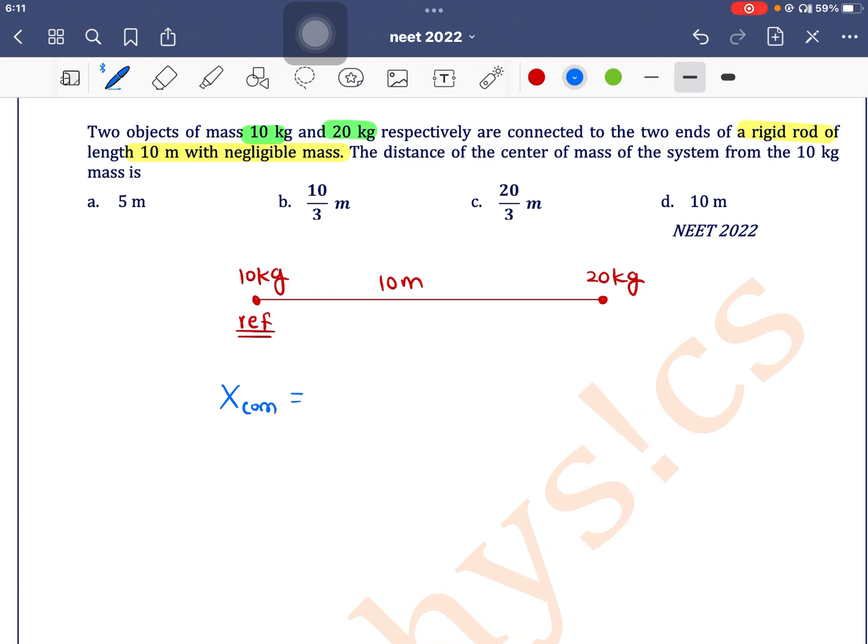So X_COM is equal to M1 X1 plus M2 X2 divided by M1 plus M2. So M1 is 10, X1 is 0, M2 is 20, X2 is 10, divided by 10 plus 20.